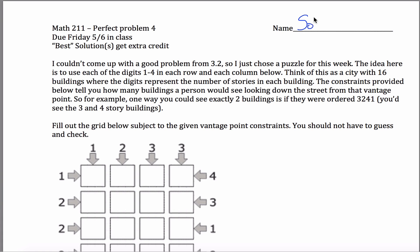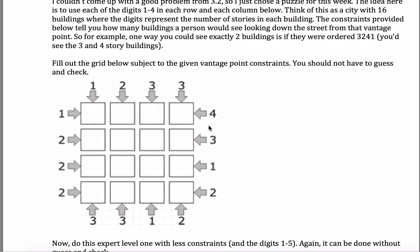Here are solutions for problem four for Math through 11. The idea here is a little puzzle called a skyscraper puzzle. You can picture this as a city block with streets and avenues and buildings. There are 16 buildings here — each of these squares represents a building.